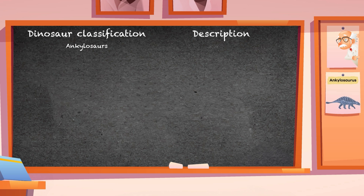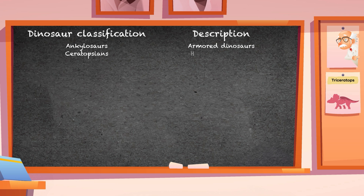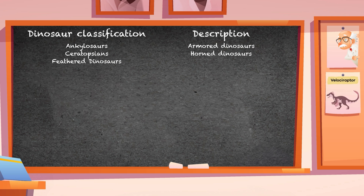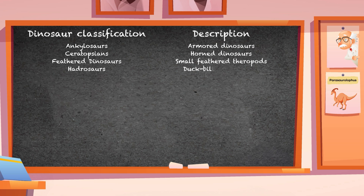Ankylosaurs: armored dinosaurs. Ceratopsians: horned dinosaurs. Feathered dinosaurs: small feathered theropods. Hadrosaurs: duck-billed dinosaurs.